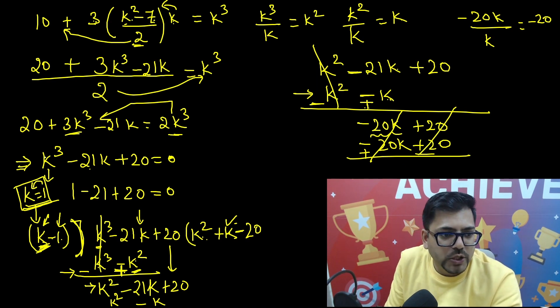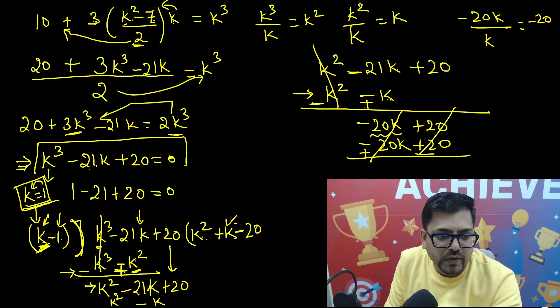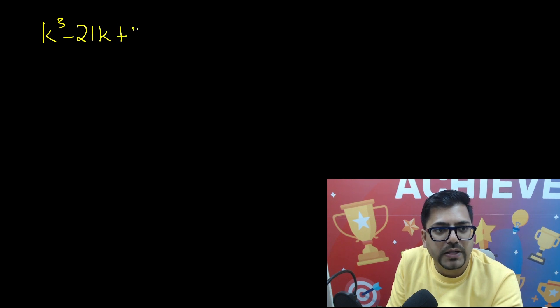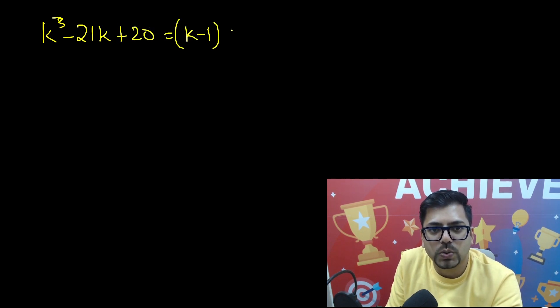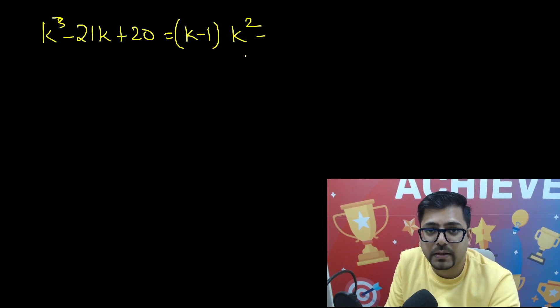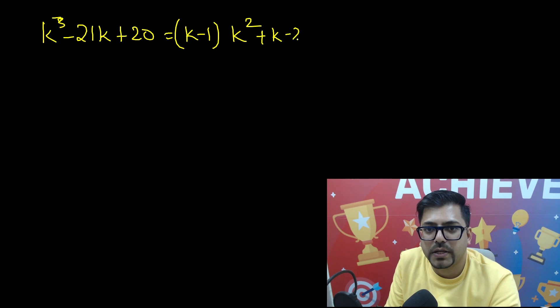So the cubic equation k cubed minus 21k plus 20 factors as (k minus 1) times (k squared plus k minus 20).